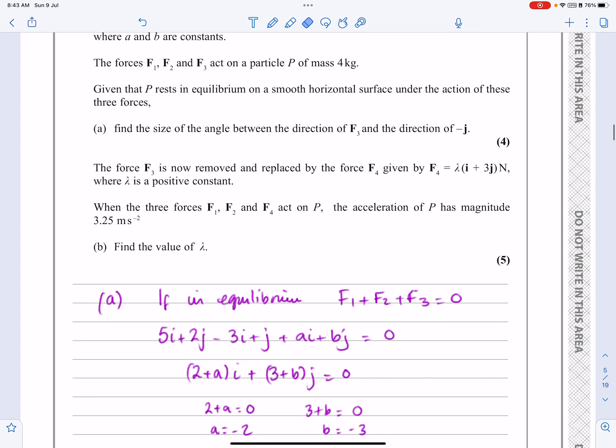Right, so for part B, it says the force F3 is now removed and replaced by F4, where F4 is this one. Okay, so the resultant's going to be F1 plus F2 plus F4. When the three forces F1 and F2 and F4 act, there's an acceleration. And because I know F equals MA and I've got this mass from up here, I already know what I'm going to do as my game plan now.